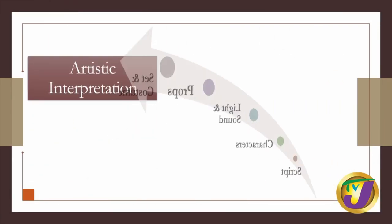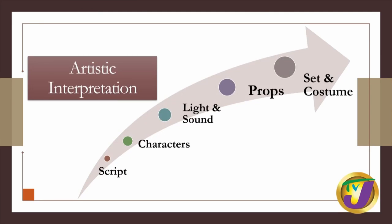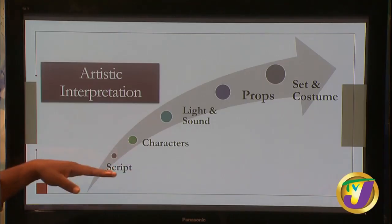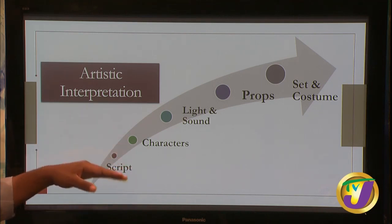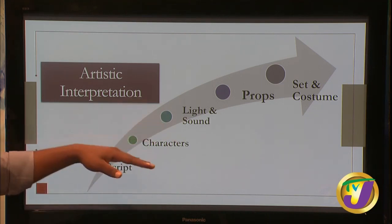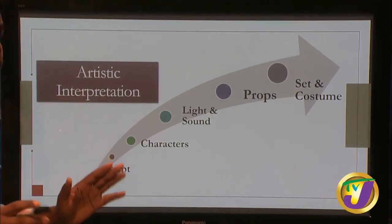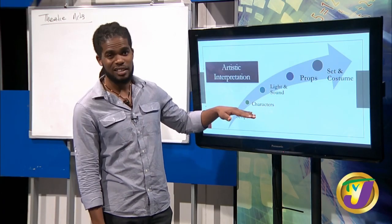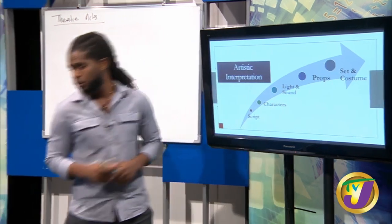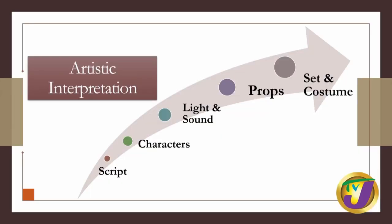With artistic interpretation, this includes a number of things. Since this is revision, we're briefly touching on these topics — you'll need to do additional reading. The first thing the director has to do is read the script, get an understanding, make a determination, and figure out how to execute it. Then we look at characters — the director has to get the best suited actors to play them. In the textual analysis, both the director and actors use the acronym PIMPS. Can anybody tell me what PIMPS represents?